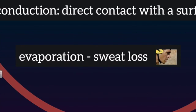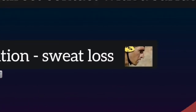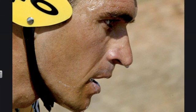Evaporation occurs when exercise increases body temperature. The hypothalamus — an area of the brain that acts as a thermostat — senses a rise in body temperature and takes action to protect the body. It directs more blood flow to the skin and signals the body to start sweating. Sweating is the primary means of cooling the body in warm environments. If sweat drips off or is wiped off with a towel, there is less benefit from this cooling system.